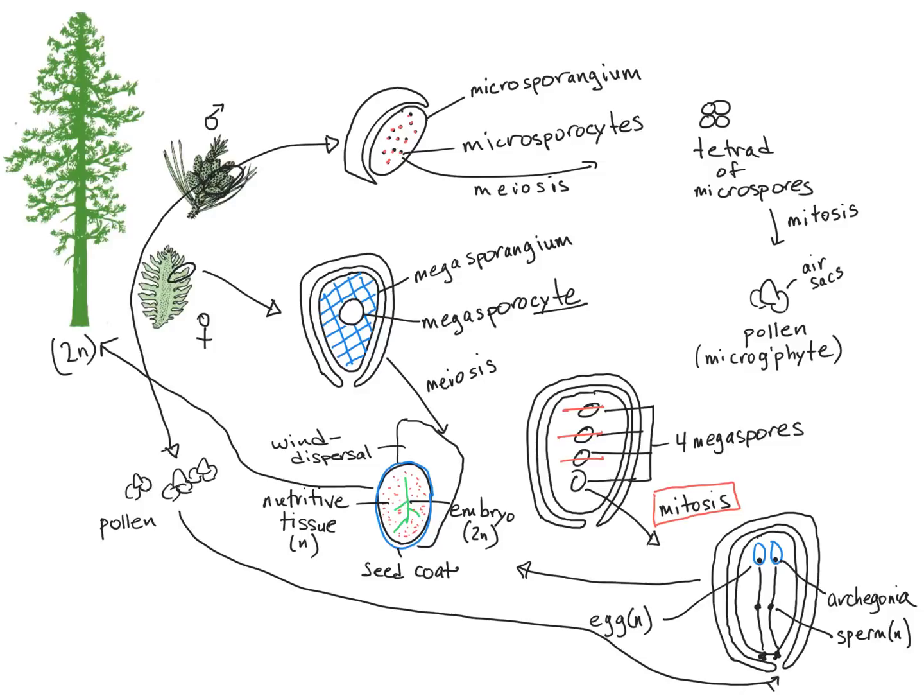Once fertilized, the zygote grows and develops into a seed. The seed represents the next sporophyte generation. It is surrounded by a protective layer that is from the original sporophyte called the seed coat and is surrounded or enclosed by a whole bunch of nutritive tissue that is the remains of the megagametophyte and is thus haploid. This is going to contrast sharply with what we see in angiosperms.